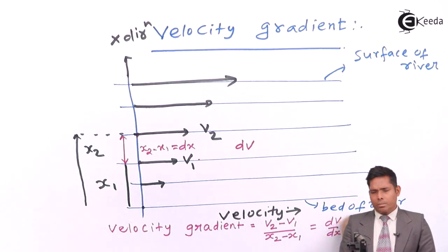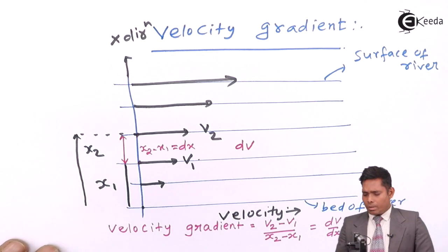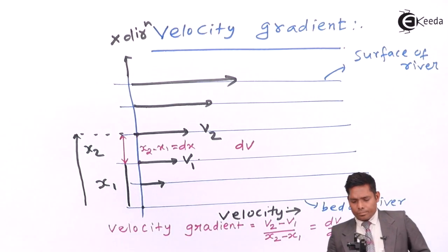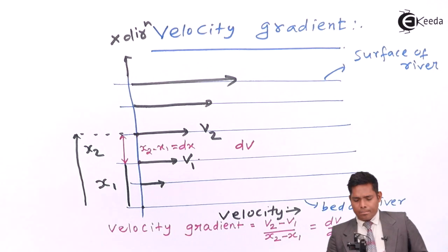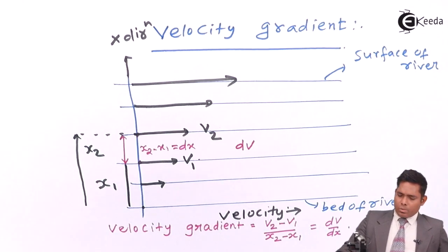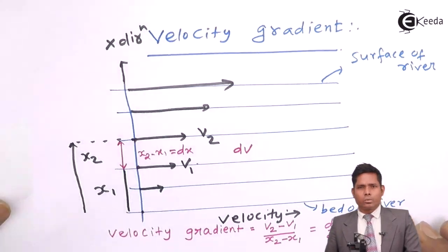The velocity gradient is the relative velocity between two layers with respect to the relative distance between them — the difference of velocities divided by the distance of separation between the two layers. The unit is meter per second divided by meter, which gives 1 per second. The dimension is T raised to minus 1. This is the velocity gradient. We will discuss something else in our next video. Thank you.